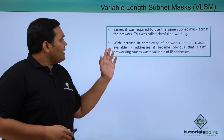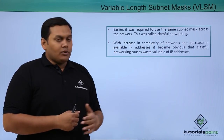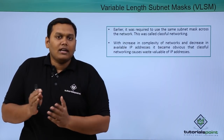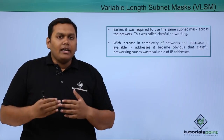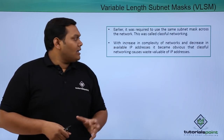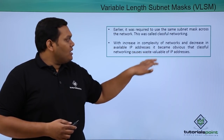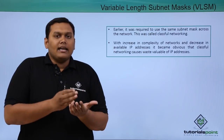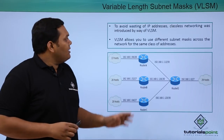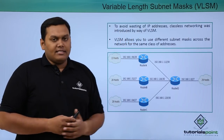Earlier, it was required to have the same subnet mask across the entire network — this is called a classful network. Due to the complexity of networks and decreasing IP addresses, classful networking was causing IP address waste. As a result, classless networking was introduced by way of VLSM.